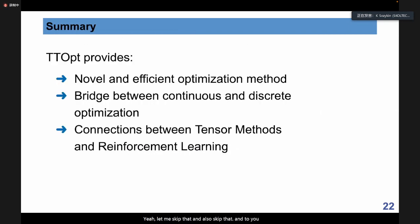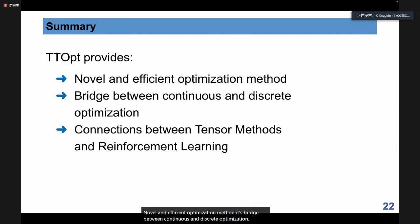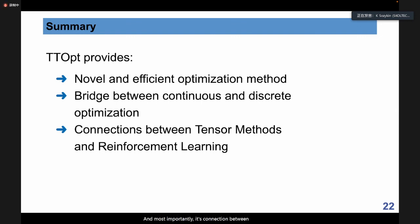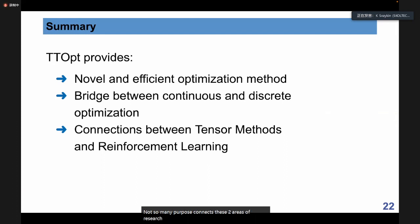To summarize: TTopt is a novel and efficient optimization method. It bridges continuous and discrete optimization, and most importantly establishes a connection between tensor methods and reinforcement learning — not many papers connect these two areas of research.